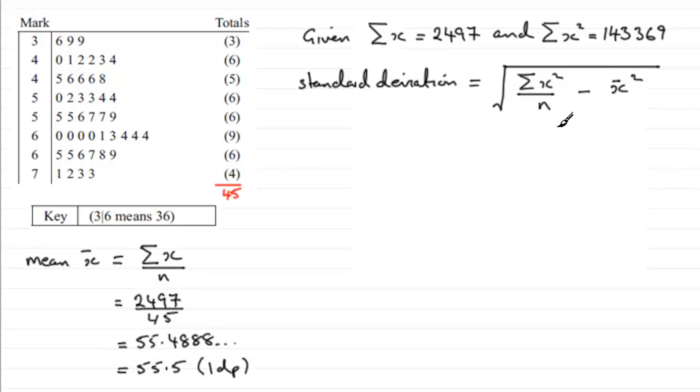All we need to do is substitute our values in. We've got to find the square root of the sum of x squared, we've got it up there, 143369, divide that by n which is 45, and then minus the mean all squared. You could put this value down if you want to keep it exact. Let's just put that in: 2497 over 45, and then we've got to square that. I wouldn't put this value in, otherwise it's going to lead to rounding errors.